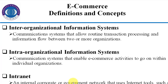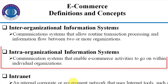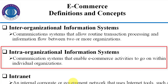If organizations use an information system to share information or process routine transactions within their internal departments, we call it an intra-organization information system. For example, in COMSATS University we use ERP and the CU Online system — these are intra-organization information systems that connect the various departments and campuses.